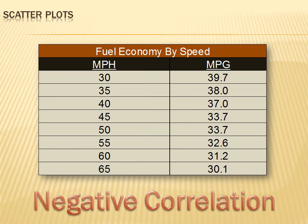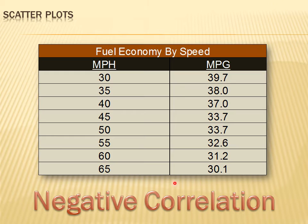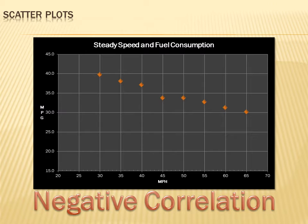Let's look at another data set and create a scatter plot. This data shows the relationship between the speed you travel and the miles per gallon you get in your car. At 30 miles per hour, you get 39.7 miles per gallon; at 65 miles per hour, you get only 30.1 miles per gallon. As miles per hour went up, miles per gallon went down — that's a negative correlation. If one variable goes up and the other goes down in a predictable fashion, we have a negative correlation.